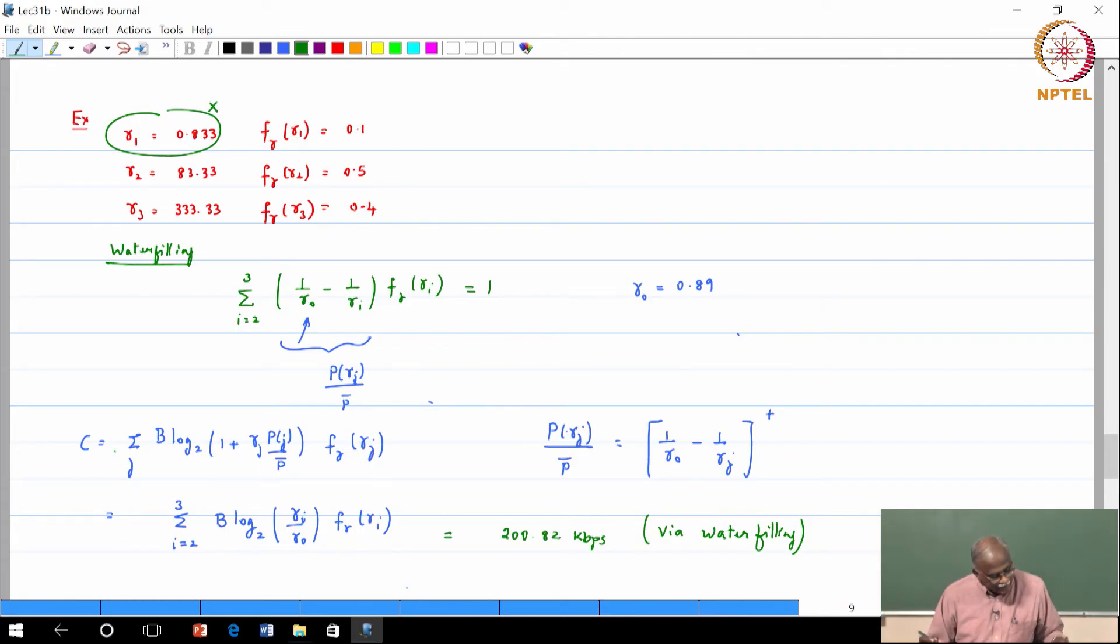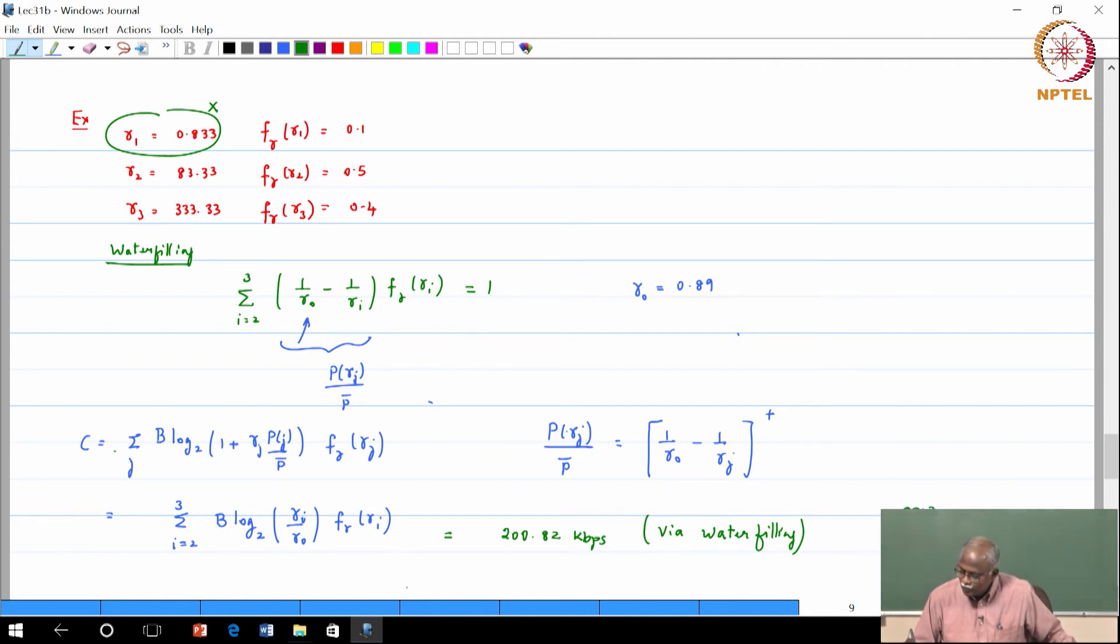Now compare this with the case if you did not do water filling and you had only CSIR, what was the throughput that you could achieve? 191.94 if you had CSIT, but if you otherwise what to do? Basically you will have outage which would mean that you would be transmitting around 172.75 kbps.